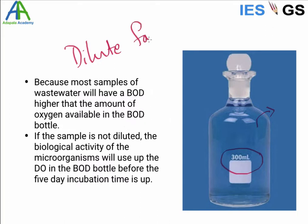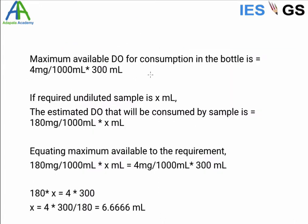So here in the question we are given a BOD bottle of 300 ml and the oxygen availability is given, that is 4 mg/L. So total oxygen available will be 4 mg/1000 ml times 300 ml.